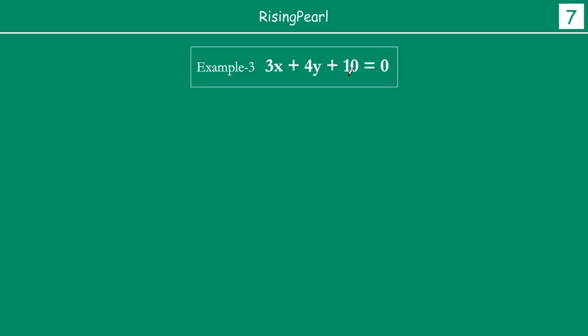This is our example number three and we have 3x plus 4y plus 10 equal to 0. This is the classic form of writing a linear equation in two variables. Our first step tells us we want to rewrite this so that we can write one variable in terms of other. So you can write 3x equal to -10 minus 4y, or from there you can write x is equal to -10 minus 4y divided by 3.